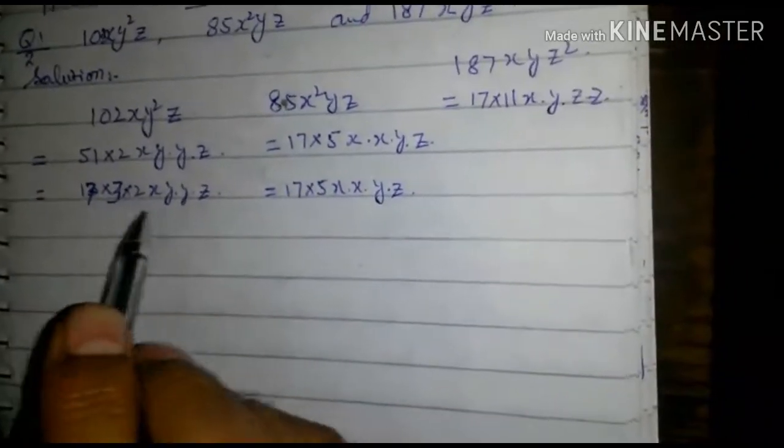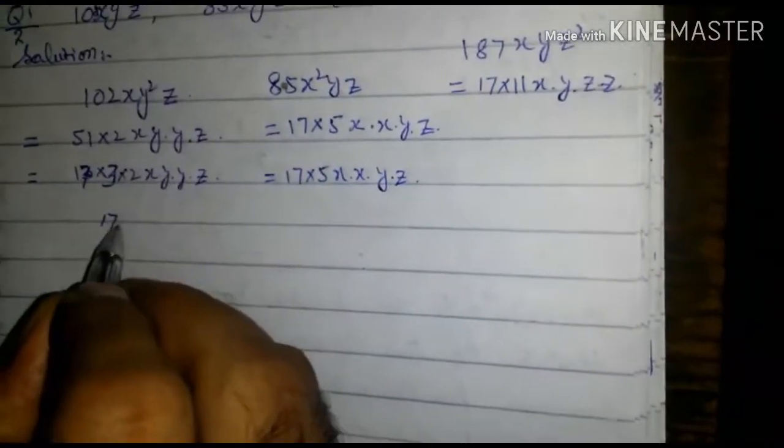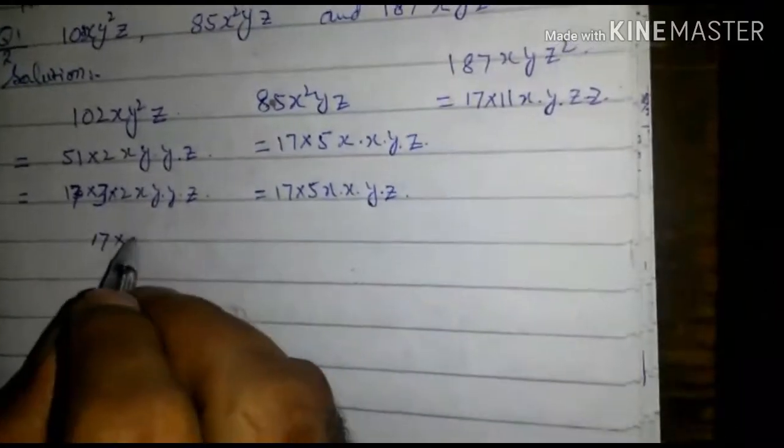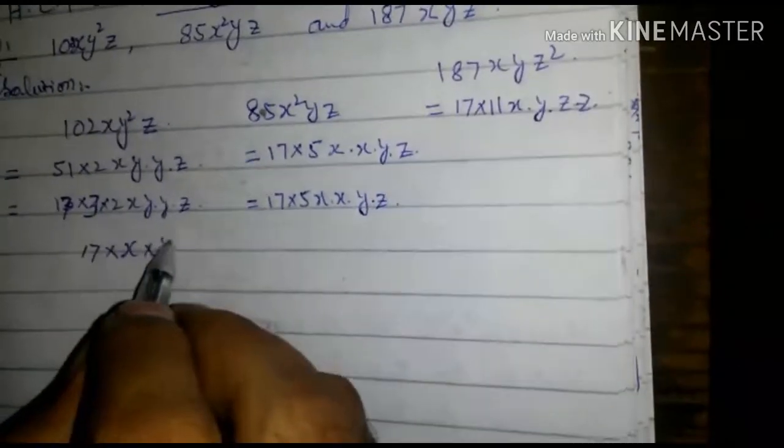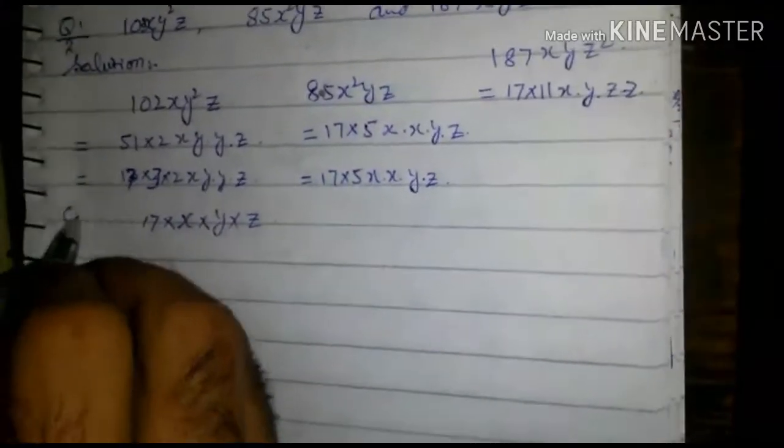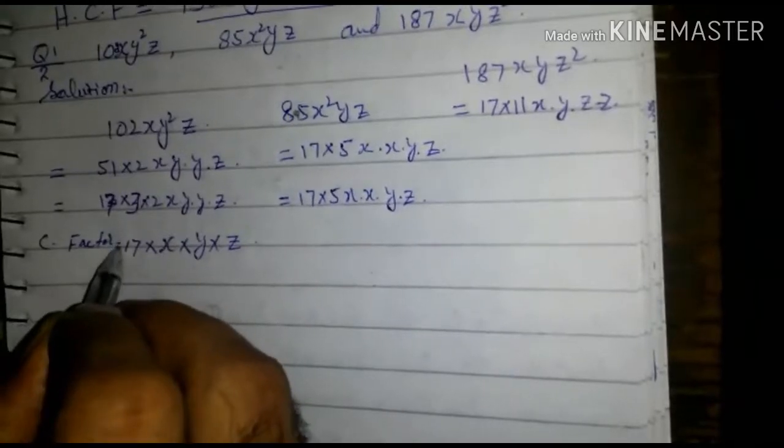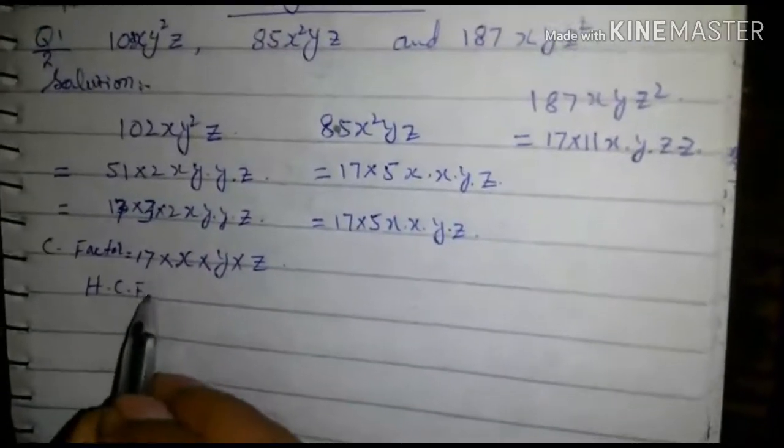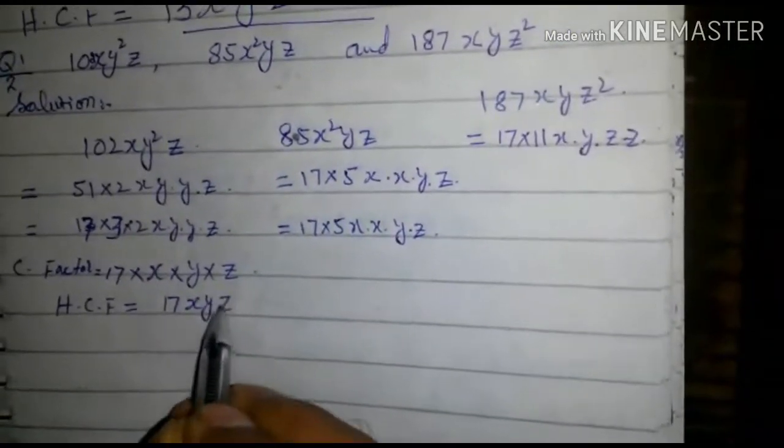Now in 1, 2, 3, 17 is common, x is common, y is common, and z is common. Common factors... HCF is equal to 17xyz.